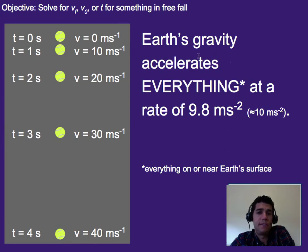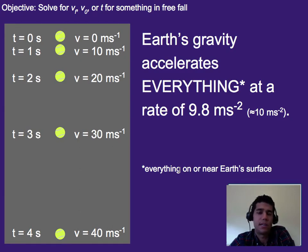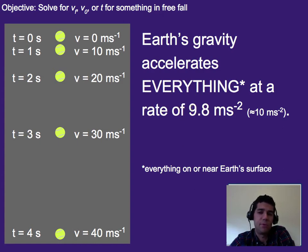Because speed is changing by 9.8 or about 10 each second, that means the acceleration is 9.8 meters per second per second, or 9.8 meters per second squared. Gravity accelerates everything at that rate of 9.8 or about 10. This applies to everything on or near the surface of the Earth — tall buildings, that's still fine; on top of a mountain, still OK. But if you're doing something like the Red Bull space jump, you're probably getting up high enough that the value of gravity will be a little less than 9.8.